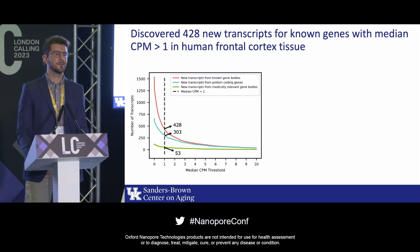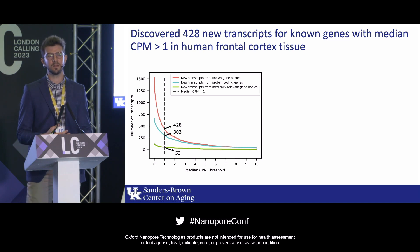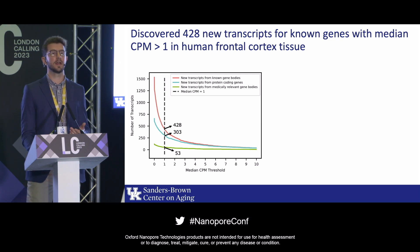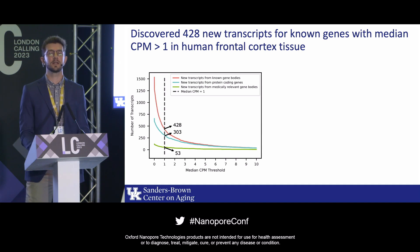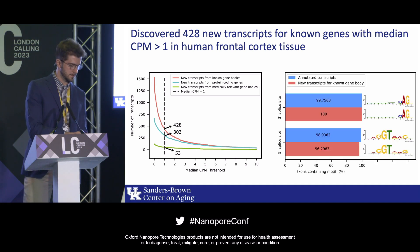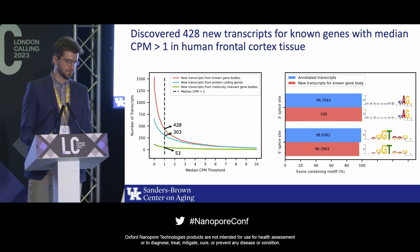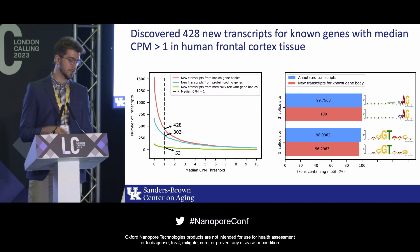We then wanted to do a sanity check to see if our transcripts look similar to the annotated transcripts. We looked at exon junctions to see if they have the same canonical splice sites as annotated transcripts. Our results, showing percent of exons containing the splice site motif on the x-axis, were very similar for our annotated and our new transcripts.